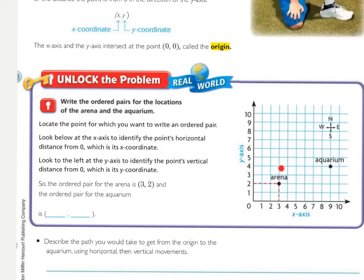Now we need to look for how far left or right is it. I'm looking right here. If I go straight down, I can see that I've gone over 3. So, the x-coordinate is 3 for the arena.